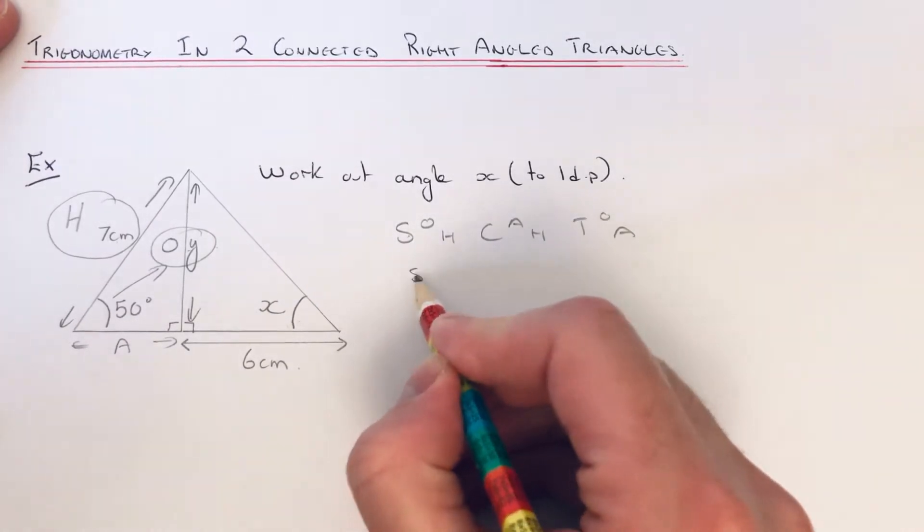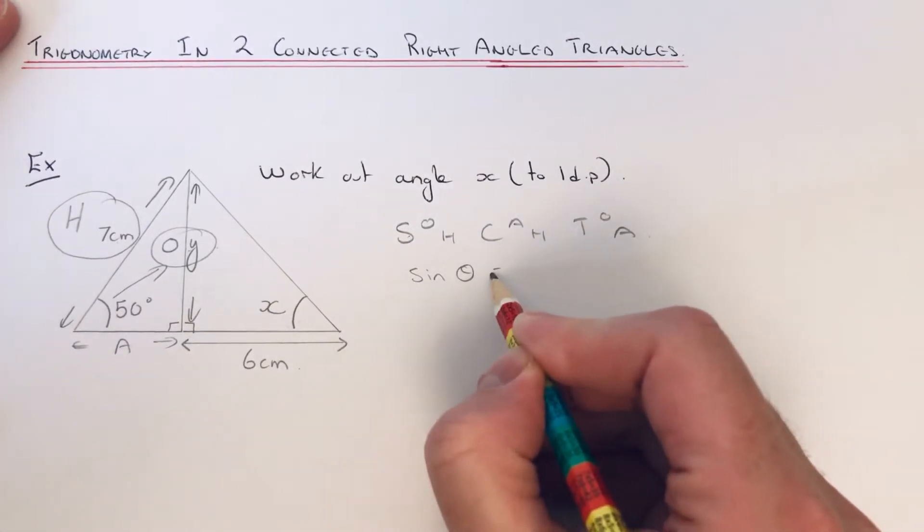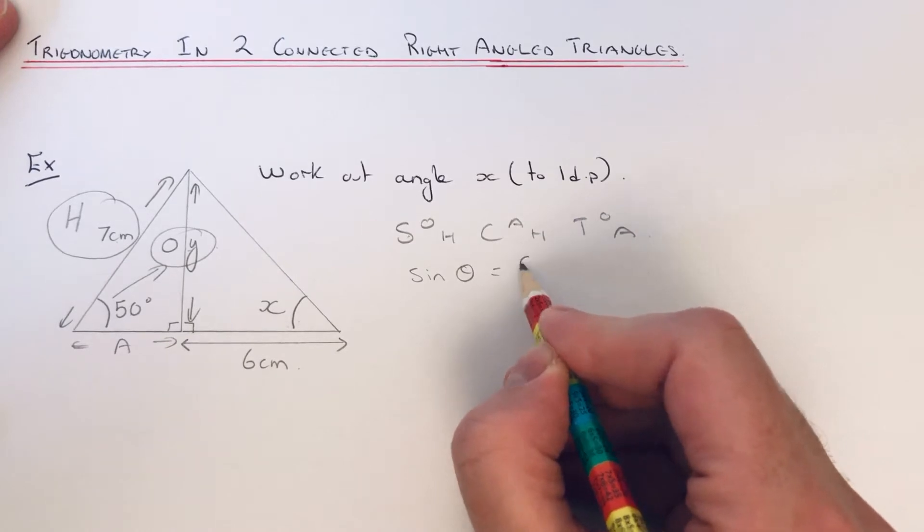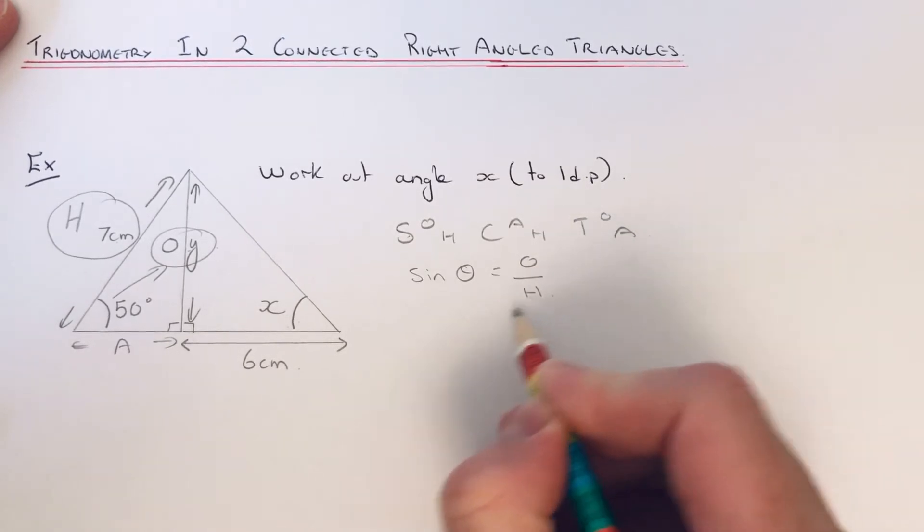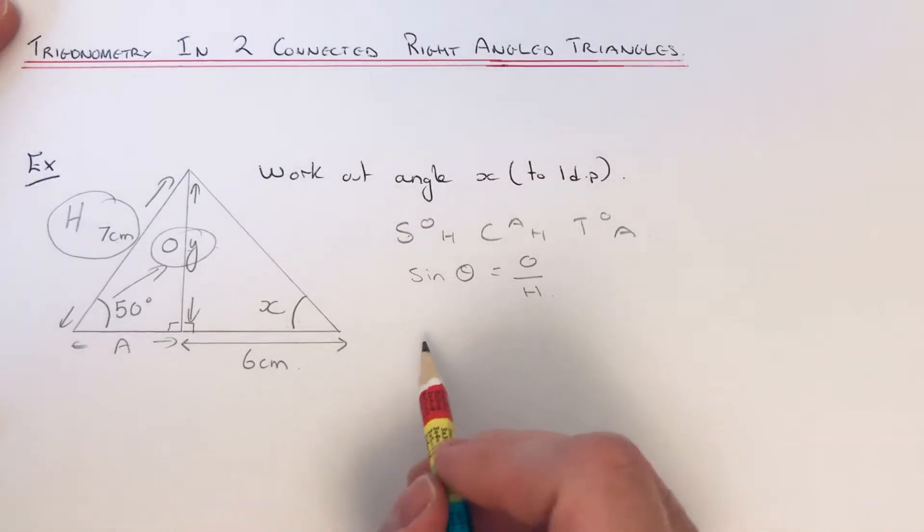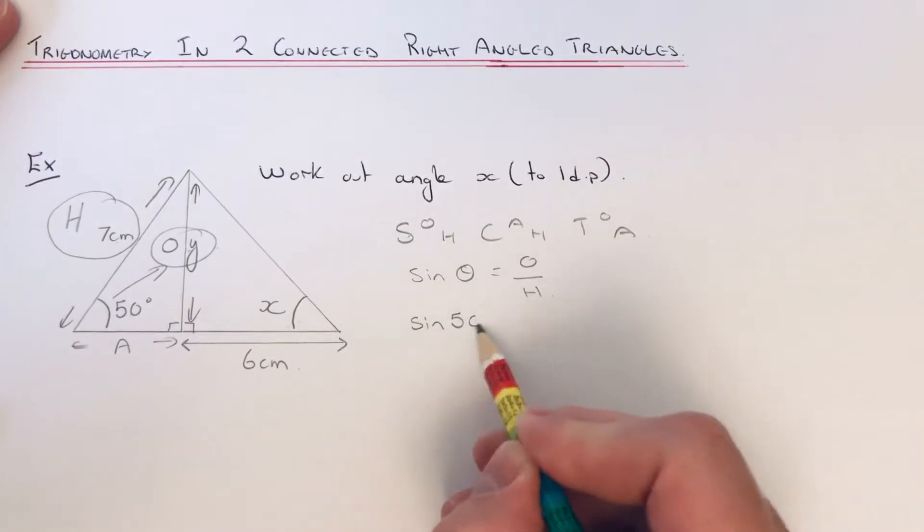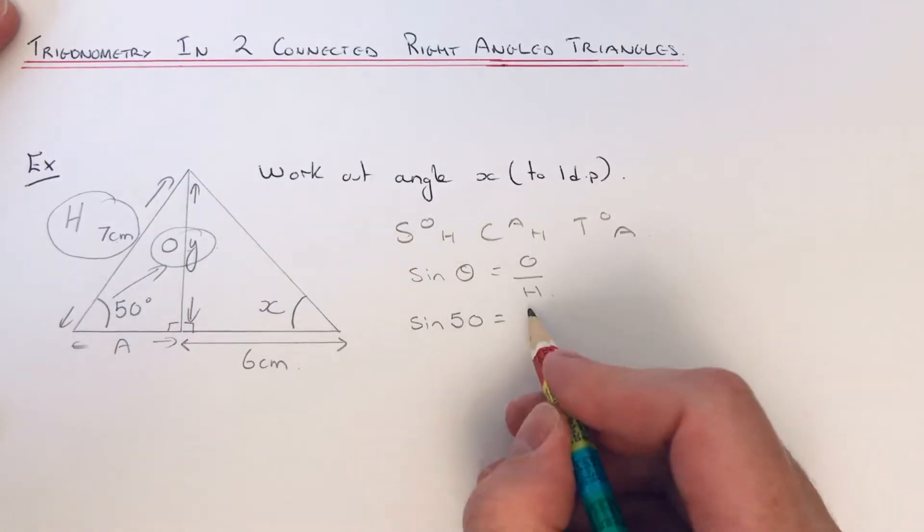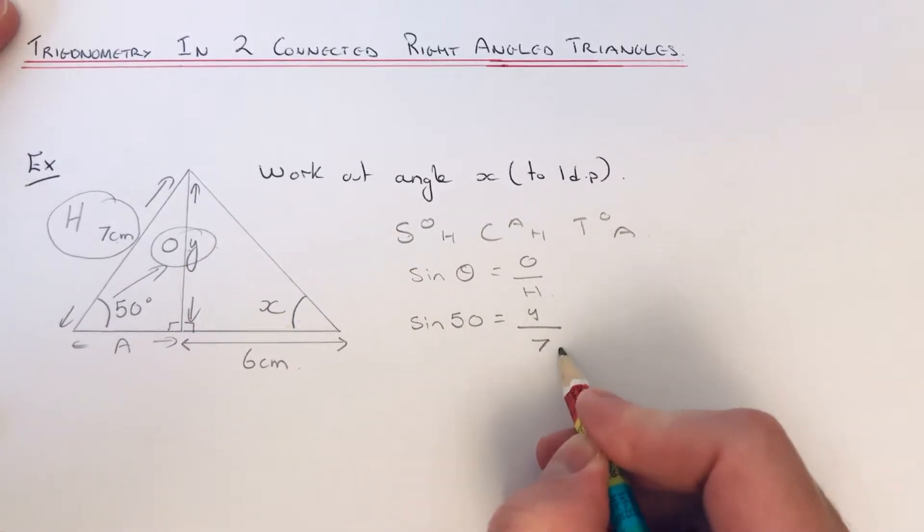If we write our formula down properly, sin theta equals opposite over hypotenuse. So fill our numbers into the formula. It'd be sin—the angle here is 50—and the opposite is Y, and the hypotenuse is 7.